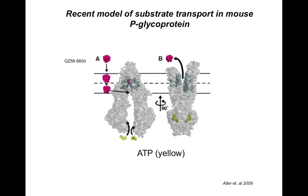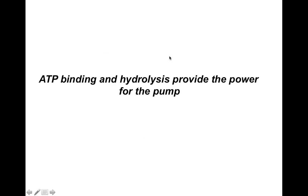This is a recent model of substrate transport in mouse PGP. Here you can see the substrate binding to the transporter which is in the inward facing state, and here is ATP in yellow binding to the transporter. After ATP binding and hydrolysis, there is a conformational change which opens the transporter to the outward facing configuration, and then the substrate can be effluxed out of the cell. Basically, ATP binding and hydrolysis provide the power for the pump.